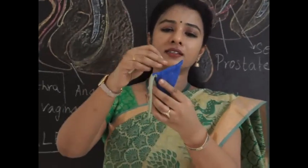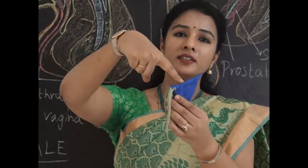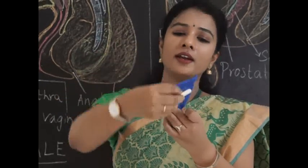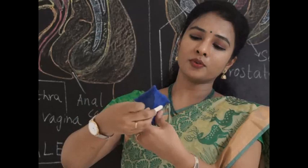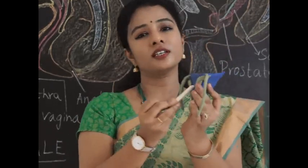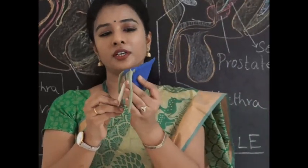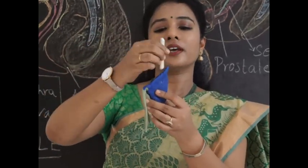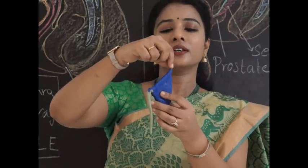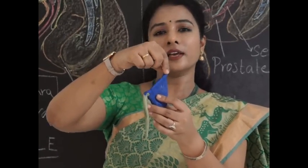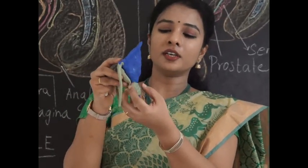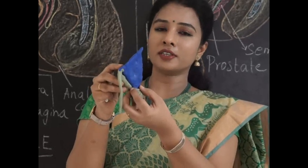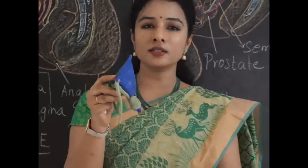The empty urinary bladder is a tetrahedral structure having four surfaces: a superior surface, an inferolateral surface present on both sides, and a posterior surface called the base of the urinary bladder. There is a tip projecting upwards giving attachment to a ligament called the median umbilical ligament — this is called the apex. The neck is the constricted, fixed part of the urinary bladder which continues below as the urethra.